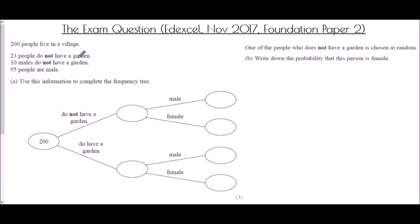So the next part, 23 people do not have a garden. So that is the first criteria that we're actually separating into people who don't have a garden and people who do. So 23 do not. So we can fill in this bubble as 23 straight away. It says that 10 males do not have a garden. So of the 23 who do not have a garden, 10 of them are male. We can tick that off. And then finally, 95 people are male. Well, we've got 10 males in this section, 95 males in total. So if I do 95 take away 10, it'll tell me how many males do have a garden. It will be 85. And that's all the information we've been given.